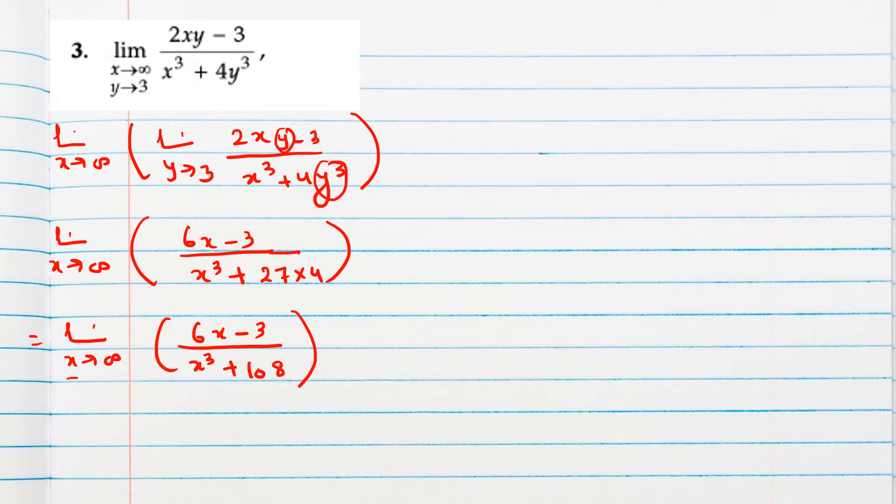Now see, whenever x is tending to infinity we should convert a function in the form of 1 by x. Why? Because as x tends to infinity, 1 by x tends to 0. That means from this only we can get this by taking reciprocal. So 1 by infinity means 0 only, because infinity is 1 by 0. So we can get easily that x tends to infinity, 1 by x tends to 0.